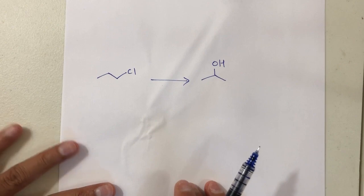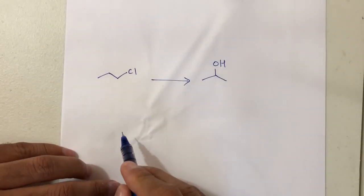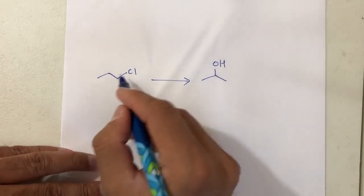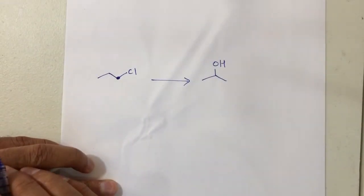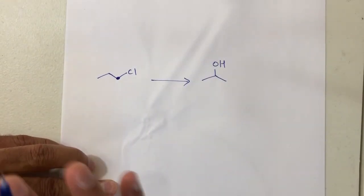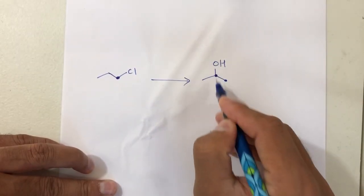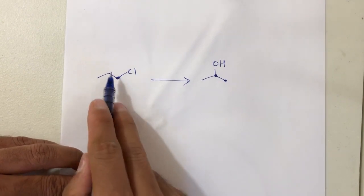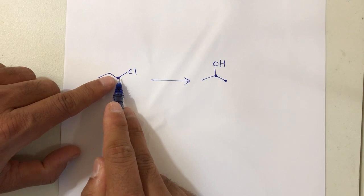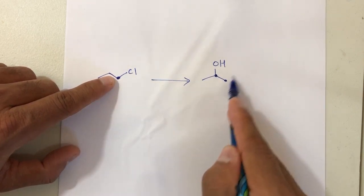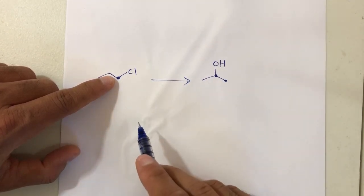Let's try one more. Pause the video if you want to try it yourself. What I have here is a carbon with a leaving group, which means I'm definitely doing elimination or substitution somewhere. Then I have a carbon with an OH. Can I get directly from starting material to product? If I do substitution and throw NaOH, OH will go here — but I can't make OH go to the other carbon. So direct access is not possible.